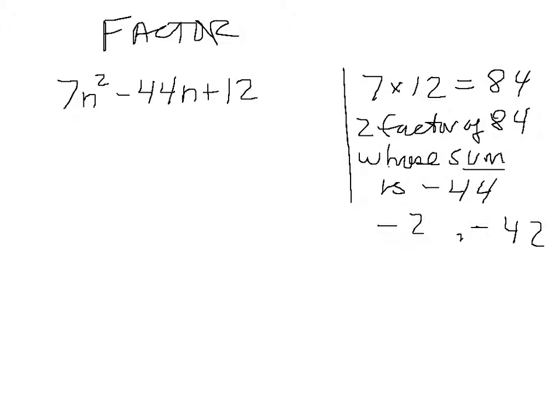And what are those two negative numbers? Well, you can write all the pairs of factors of 84. But what you'll see is you want minus 2 and minus 42. Minus 2 times minus 42 gives you 84 and their sum is minus 44. So I go back to my original problem and I group.